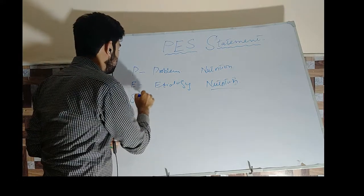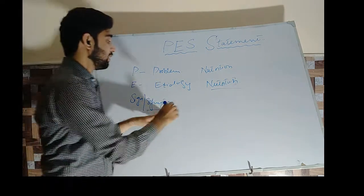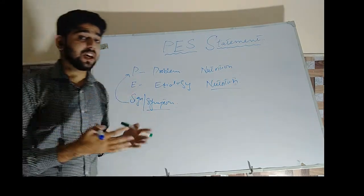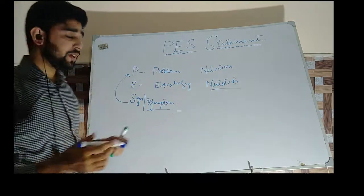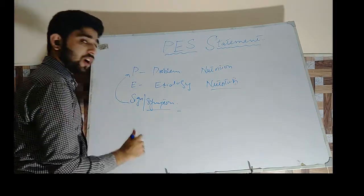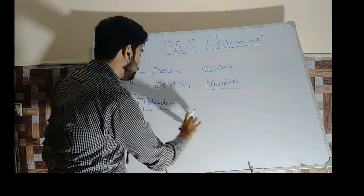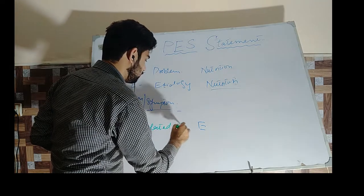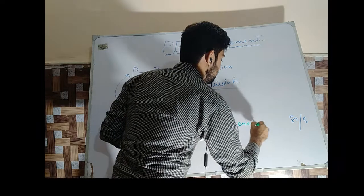And the last is signs and symptoms. Signs and symptoms is actually a characteristic that defines your problem. In signs and symptoms, we describe how we came to know about this problem and how severe it is. So we write the PES statement starting with the problem, then we link the problem with etiology using the specific words 'related to,' and we link etiology with signs and symptoms using the specific words 'evidenced by.'